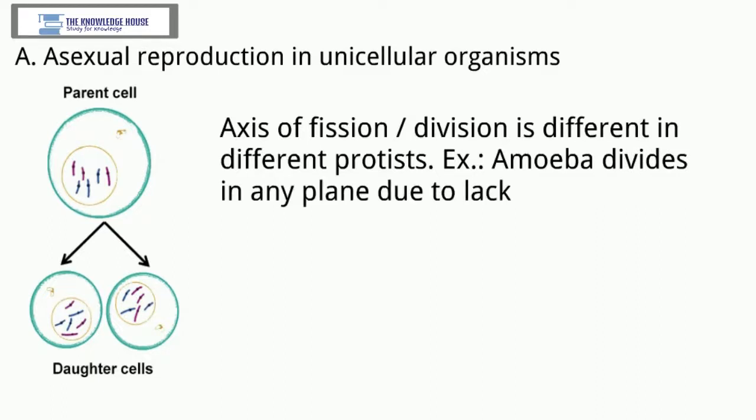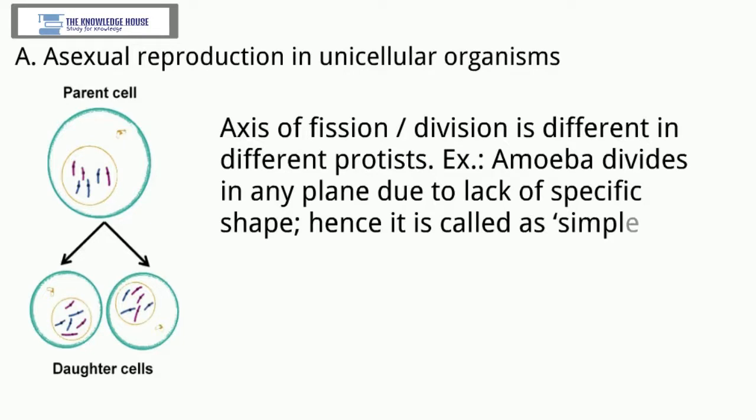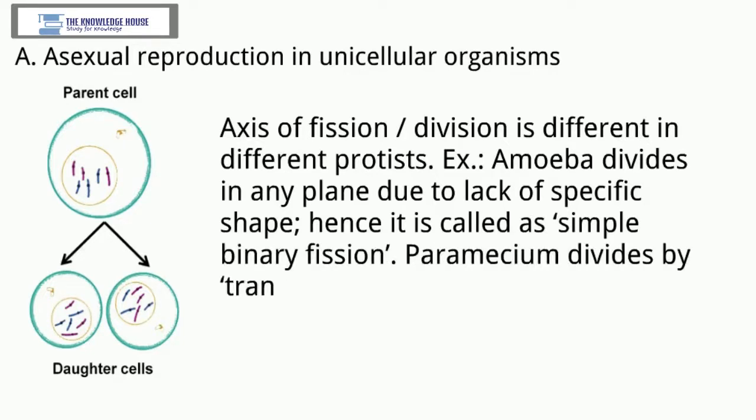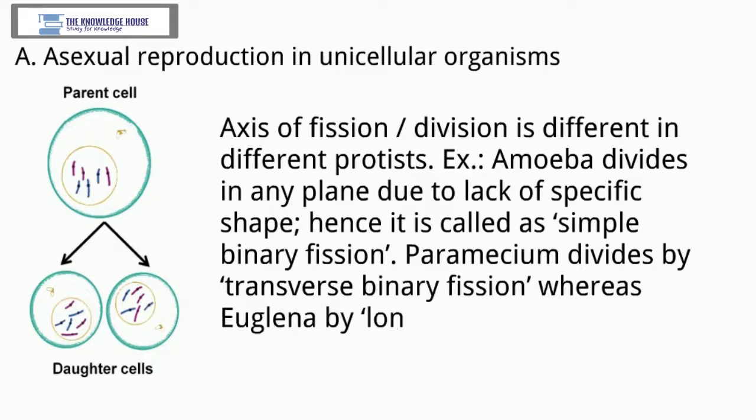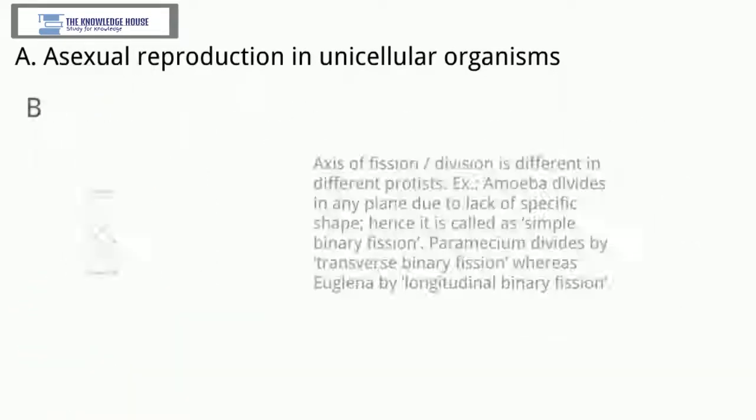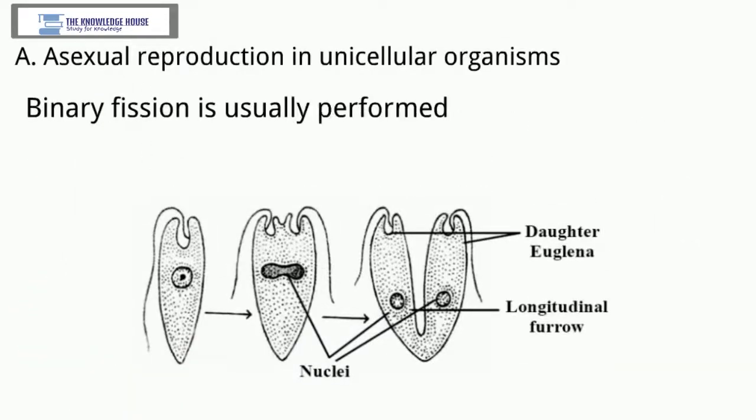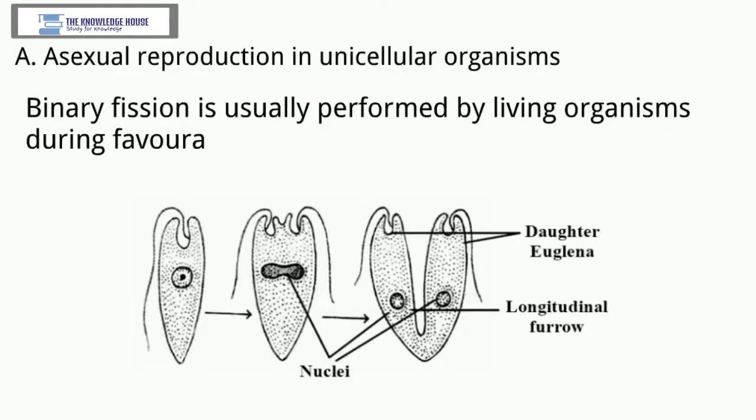Example: amoeba divides in any plane due to lack of specific shape. Hence, it is called simple binary fission. Paramecium divides by transverse binary fission whereas euglena by longitudinal binary fission. Binary fission is usually performed by living organisms during favorable conditions, i.e., availability of abundant food material.